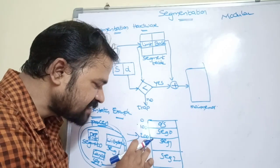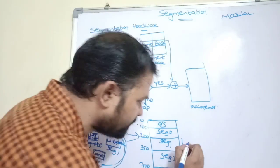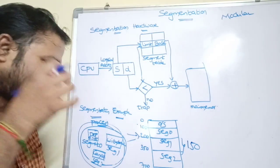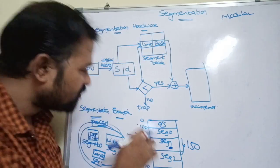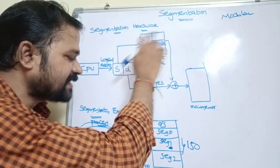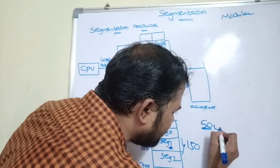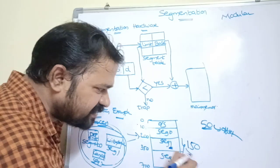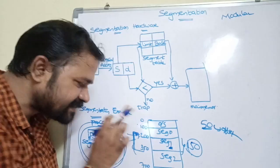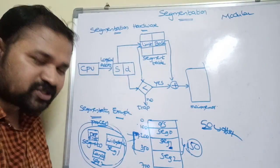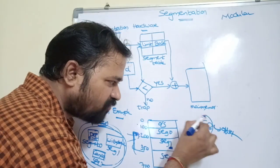Let us assume the CPU is accessing segment one. The base address of segment one is 200, and the limit is 150 — calculated as 350 minus 200. While accessing an instruction, the CPU generates a logical address containing the segment number, which is 1. This is passed to the segment table to get the base address and limit. The offset here is 50, meaning we are accessing the 50th instruction within this segment, which totally contains 150 instructions.